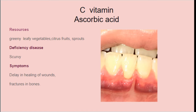One more water-soluble vitamin is vitamin C. Resources are green leafy vegetables, citrus fruits, and sprouts. The scientific name of vitamin C is ascorbic acid. Deficiency of this vitamin leads to scurvy disease. The symptoms are delay in healing of wounds, fractures in bones, and bleeding of blood in the mouth.